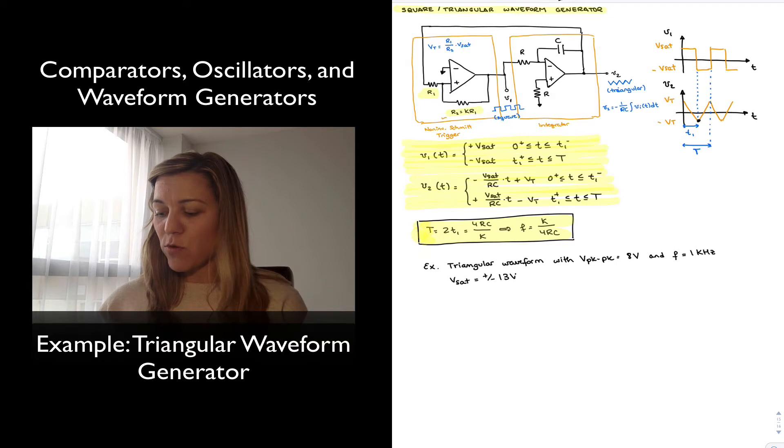So it is obvious that since we want a triangular waveform generator, we are going to take V2 as the output of our circuit. And then, in order to set our period of oscillation, well, first we're going to go ahead and set our amplitude.